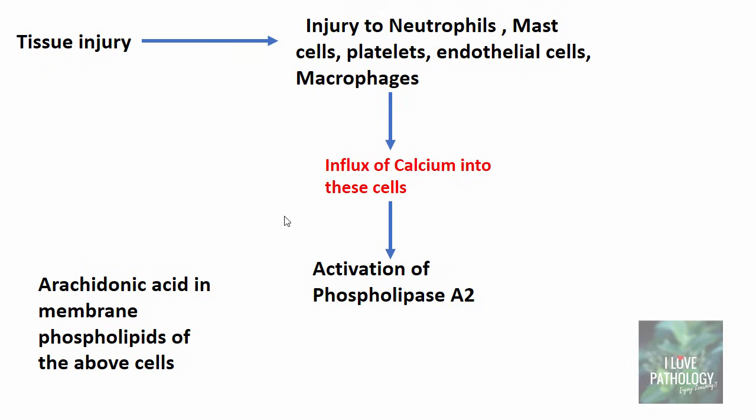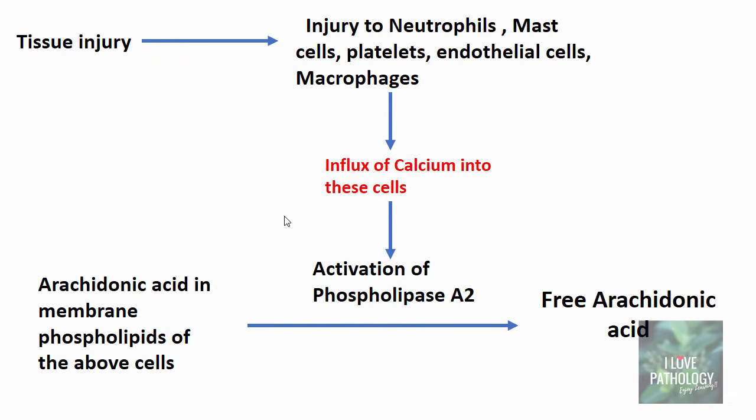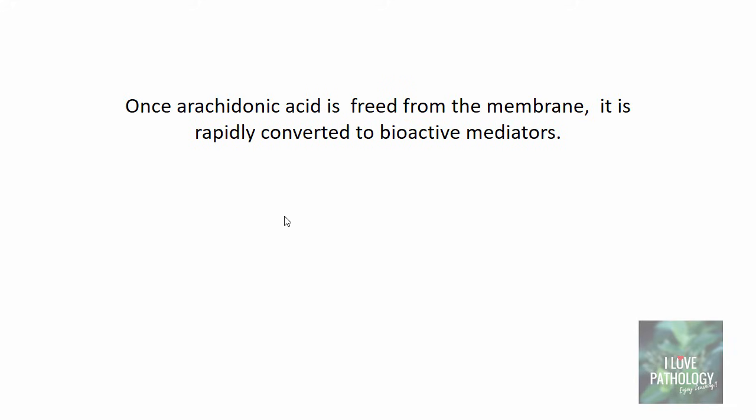Arachidonic acid is normally present in the bound form, or esterified, to the membrane phospholipid in each of these cells — in all cells of the body. Whenever there is an activation of phospholipase A2, this arachidonic acid which is esterified in the membrane phospholipid is now released as free arachidonic acid. Whenever there is free arachidonic acid available, it is rapidly converted to bioactive mediators.